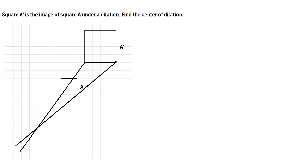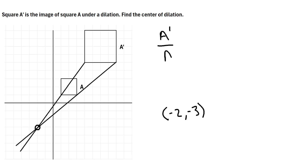It looks like roughly the point of intersection is this point right here, which would be negative two, negative three. So negative two, negative three appears to be the center of dilation. The way we can double-check is to find the scale factor — what's the ratio of A' to A?